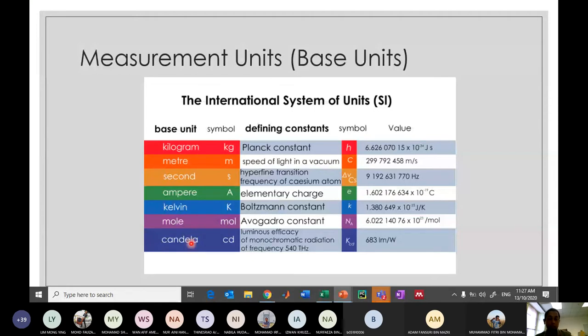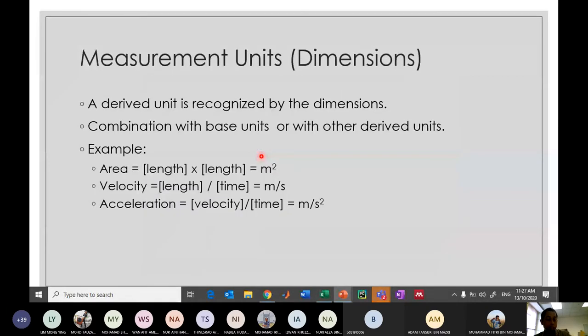From these seven there are defining constants that they use to develop the unit, and these are the actual values given for each defining constant. I'm not going to discuss in detail how from this value they get this value, because that involves another different story. We are just going to apply it. From those base units we can produce derived units. A derived unit is recognized by the dimension and it's actually a combination with base units or with other derived units.